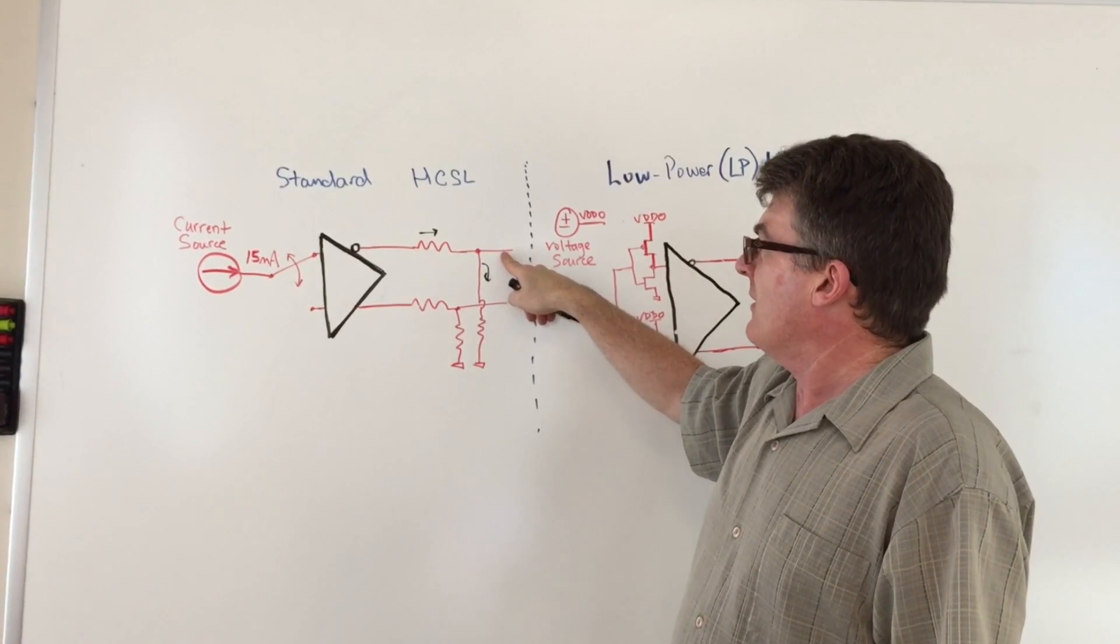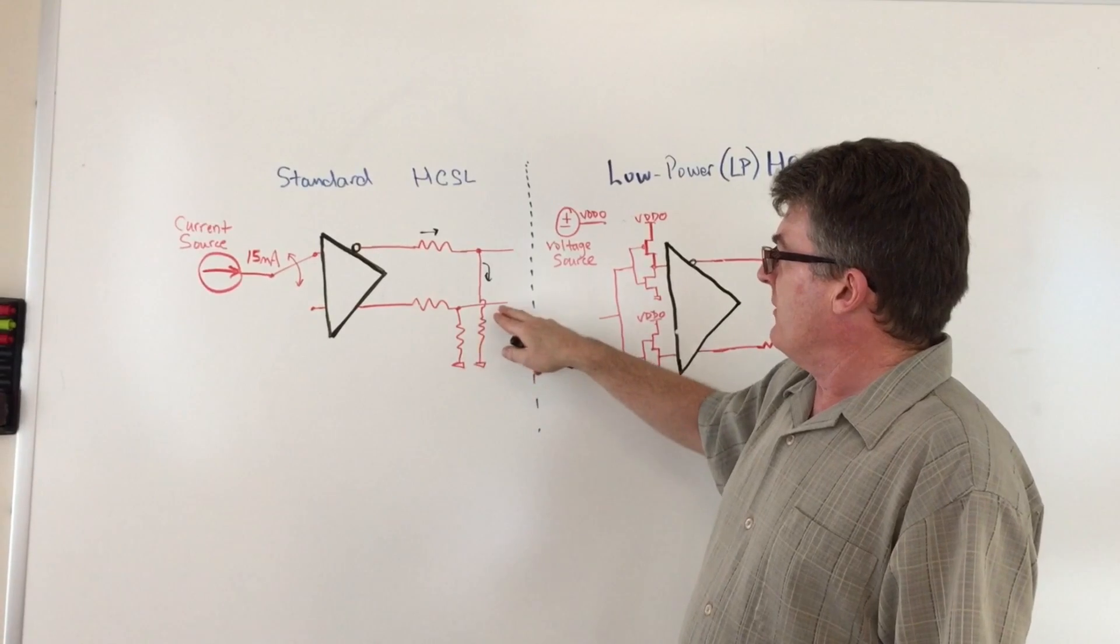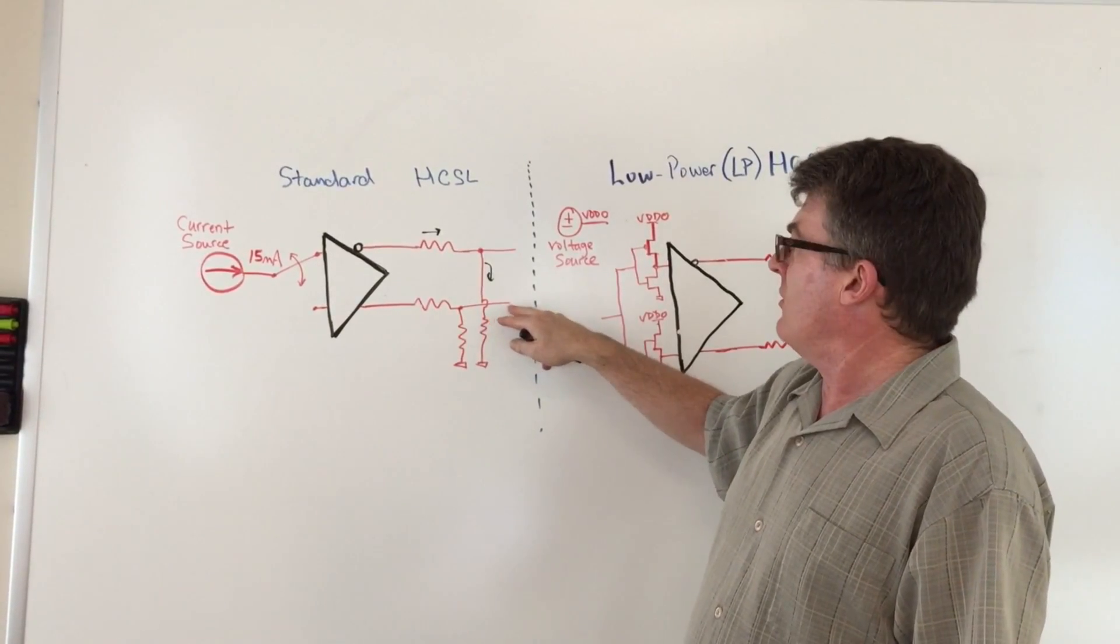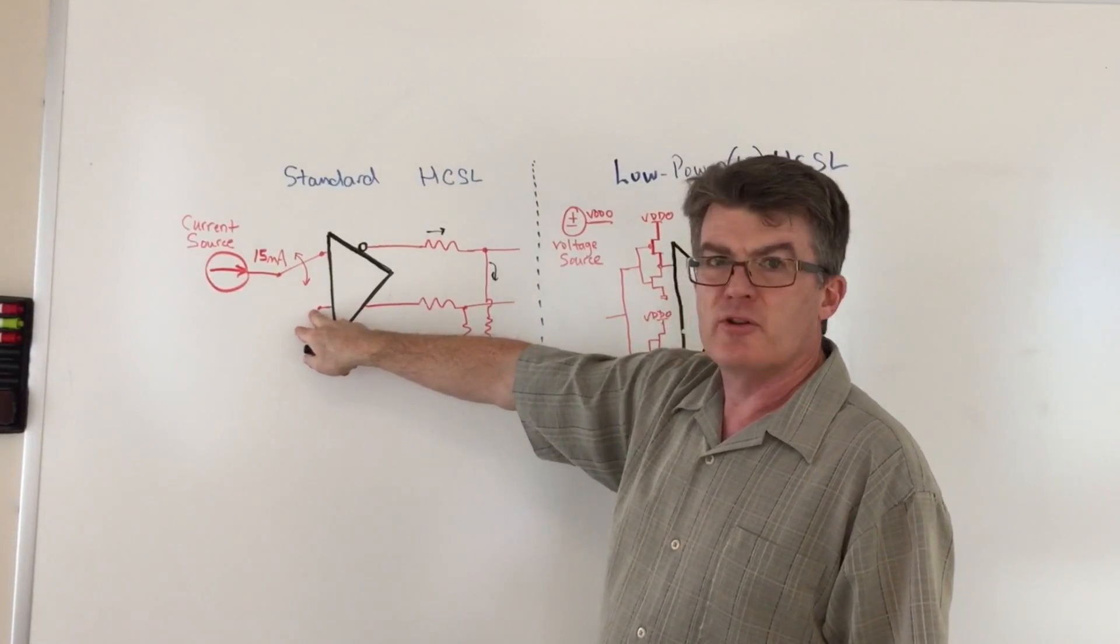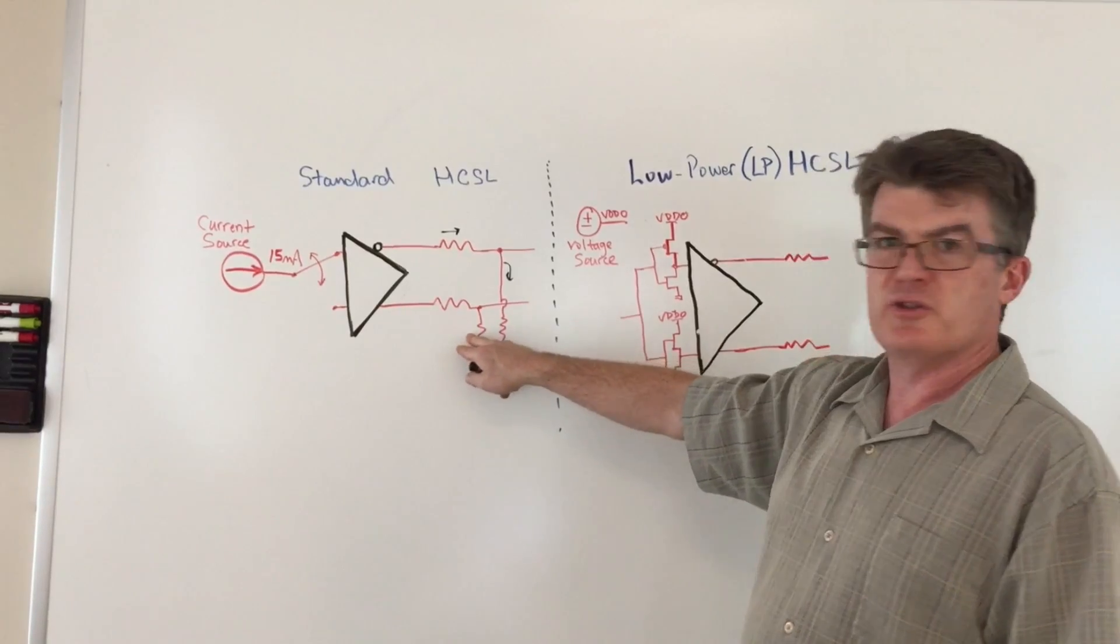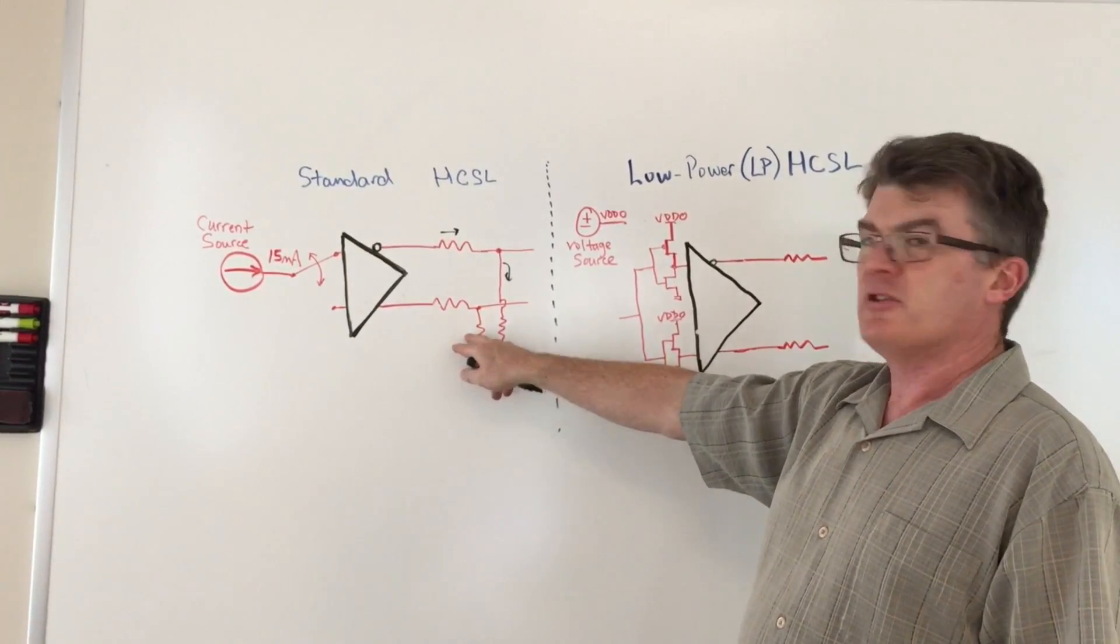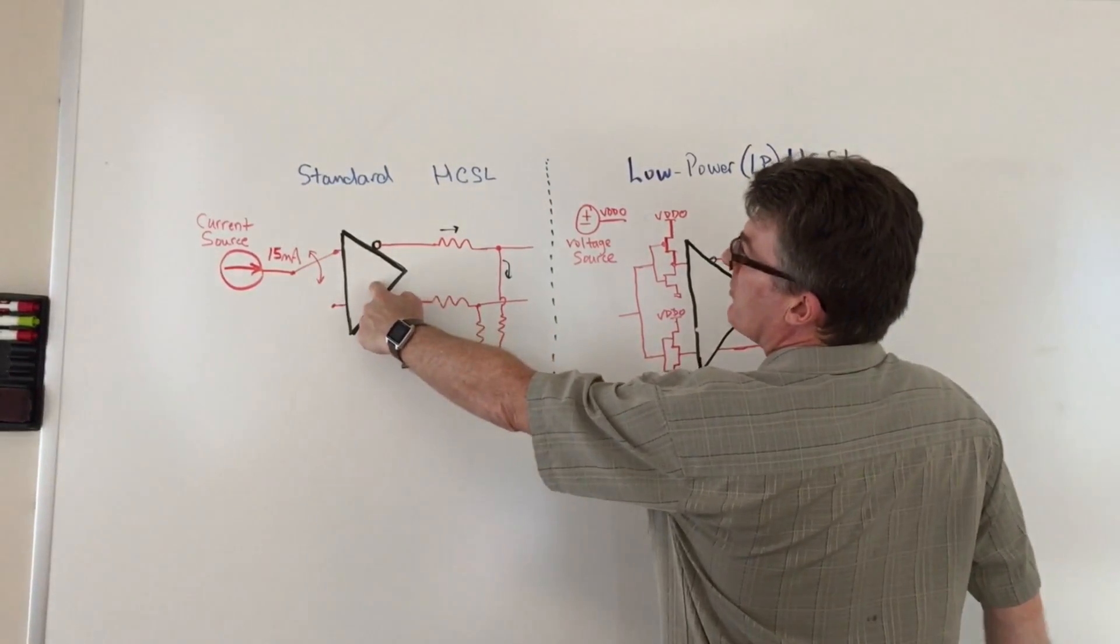And then when the current is switched, you've got the 750 millivolts on the line. When you disconnect the current source, the charge on the line dissipates through this resistor to ground. That's how this works—you're constantly steering a current back and forth. It's 15 milliamps per output